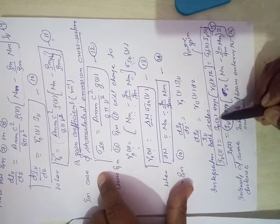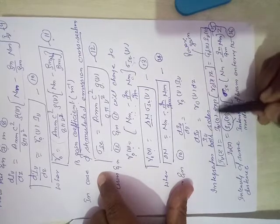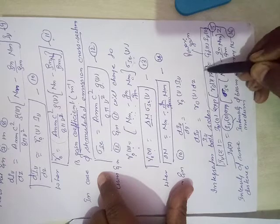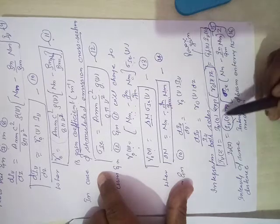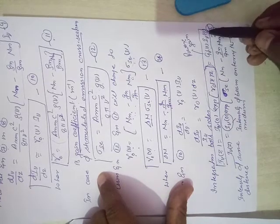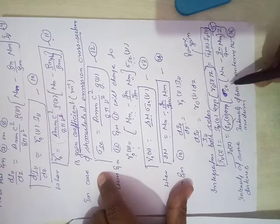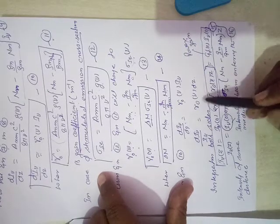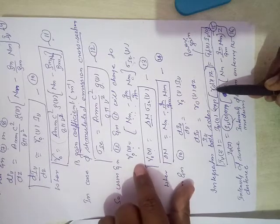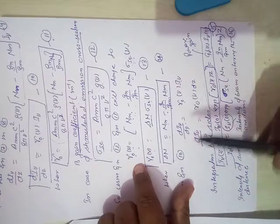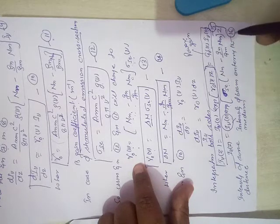If you integrate this equation, you get I_nu(z), where z means your beam is propagating along the z direction. I_nu node exponential of gamma node new into dz. From this equation, the exponential part is represented by g node new, which is known as power gain, and the remaining term is I_nu node.